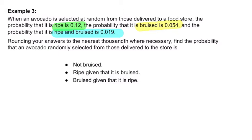Well, the probability of it being bruised is 0.054. So not bruised is the complement of that: 1 minus 0.054. That's 0.946. This goes back to our Venn diagrams.